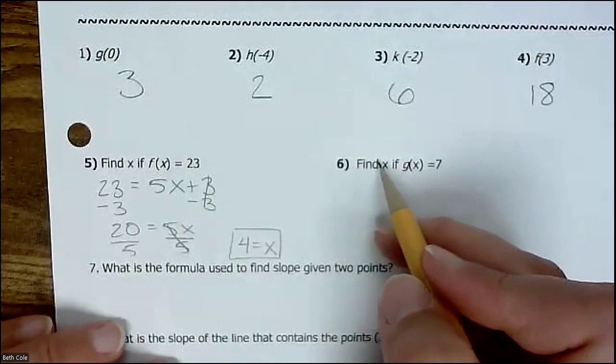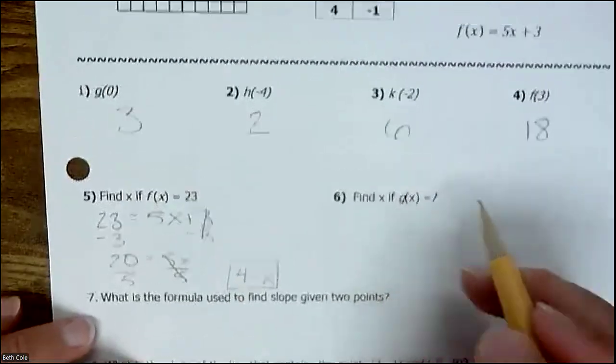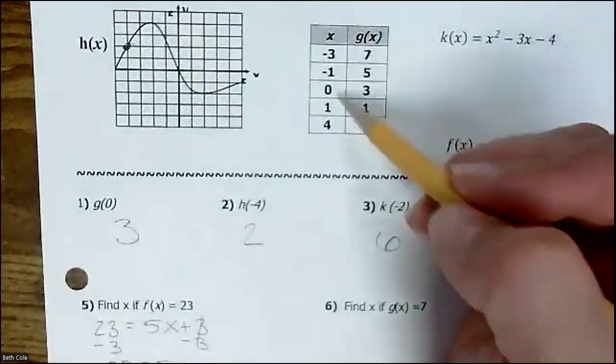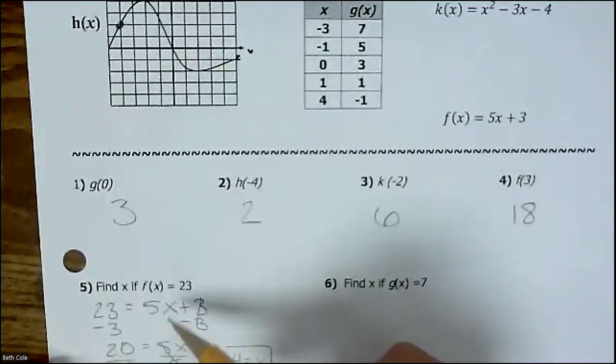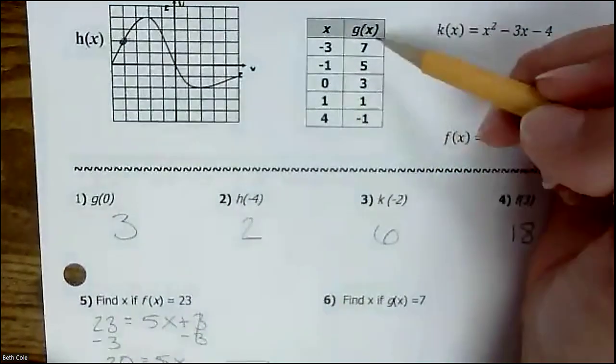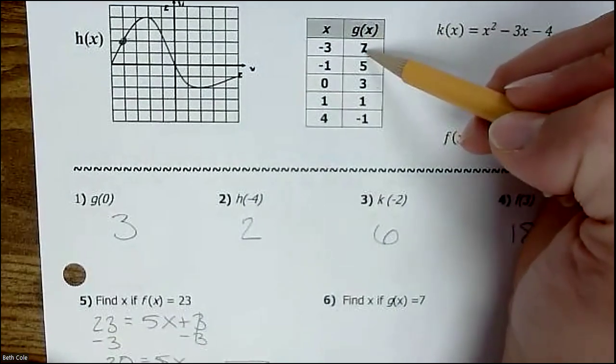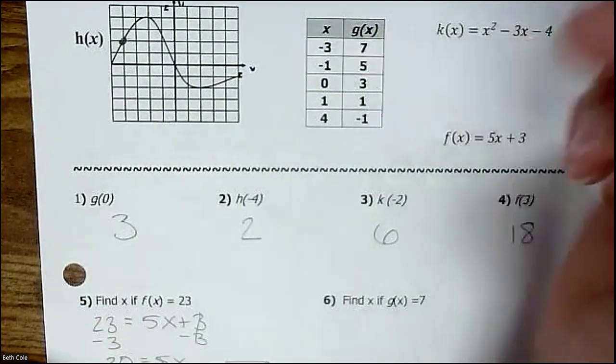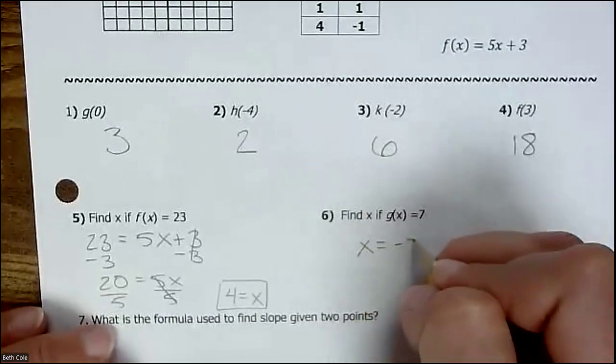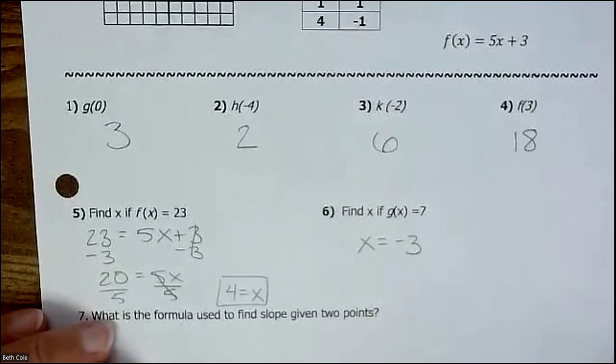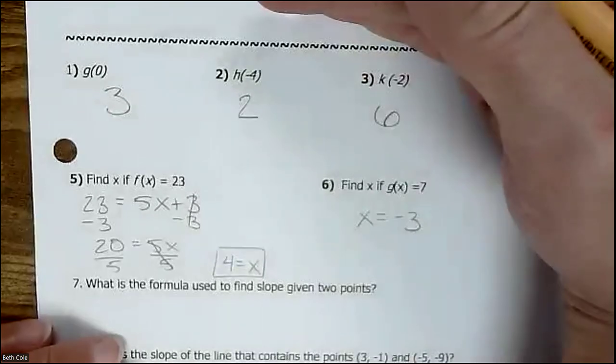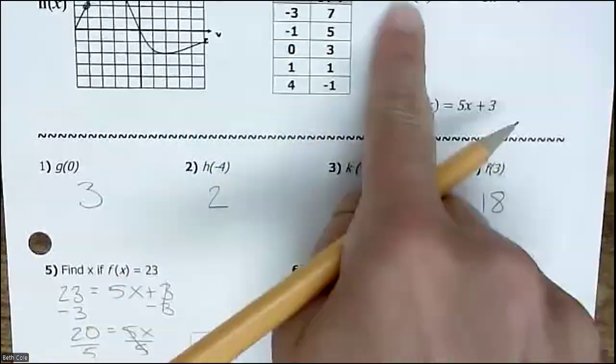This one, same thing, it's backwards. Find x if g of x equals 7. You have to make sure you look at g, and I don't have to actually do any work like I did for this one. We want g of x to be 7, so I'm going to look at the g of x column where it says 7, and that gives me negative 3 for x. So those ones went with those functions up here.